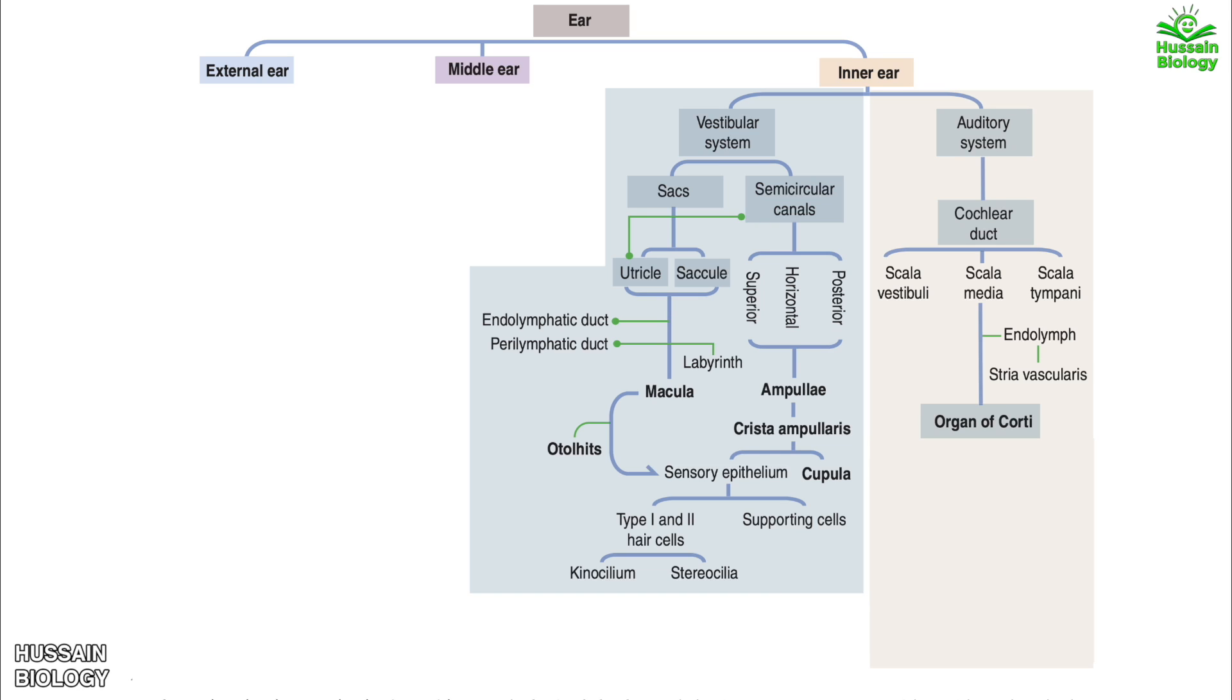It allows transduction of auditory signals into nerve impulses, and the organ of Corti has different types of cells in it, like outer hair cells and inner hair cells. This concludes the inner ear.